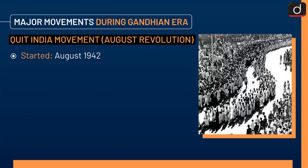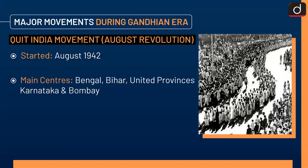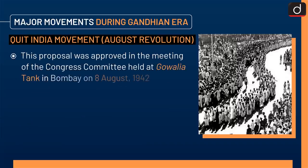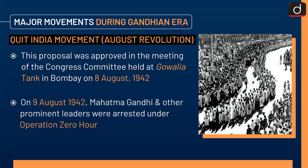Next is the Quit India Movement, also known as the August Revolution, which started in August 1942. The main centers of this movement were Bengal, Bihar, United Provinces, Karnataka, and Bombay. Congress passed it in the Wardha Session on 14 July 1942. This proposal was approved at the meeting of the All India Congress Committee held at Gowalia Tank in Bombay on 8 August 1942. On 9 August 1942, Mahatma Gandhi and other prominent leaders were arrested under Operation Zero Hour.